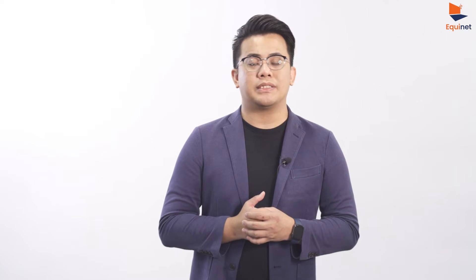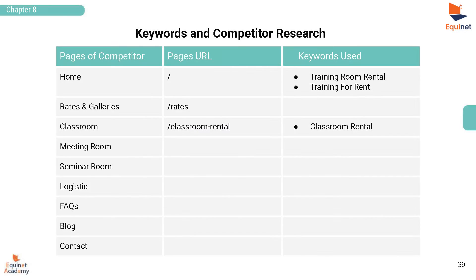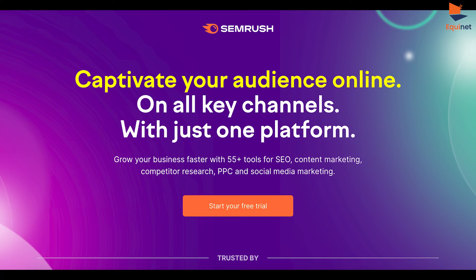Let's start off by looking at keywords and competitor research. When creating your website, it is a good practice to look at your direct competitors and see how they have designed their website. This includes the keywords they may have used throughout their website and the different pages of their website. You can make use of tools like Ahrefs and SEMrush to do your keyword research. To simplify the process, you can also consider using Google suggestions to look for suitable keywords.